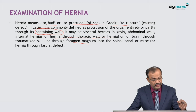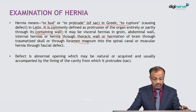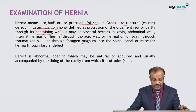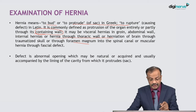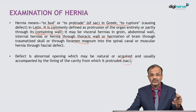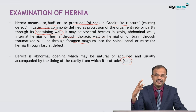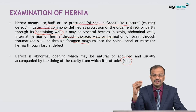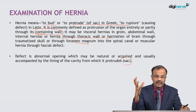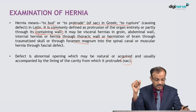A defect is an abnormal opening which may be natural or acquired, and is usually accompanied by a lining of the cavity from which content protrudes — this lining is called the hernia sac. If you observe hernia surgery a few times, you will understand what exactly the sac means. It is a very important structure for hernia dissection and identification — we identify the sac first, and then we get into the hernia.